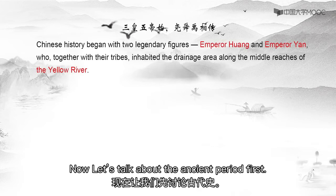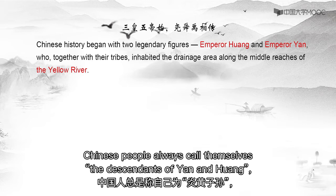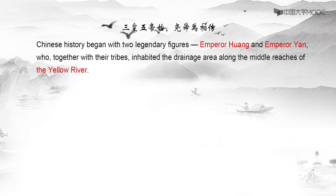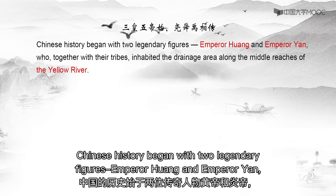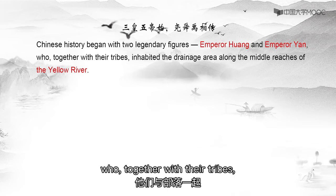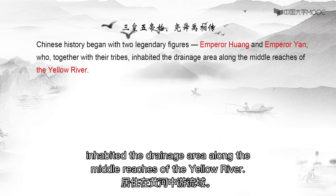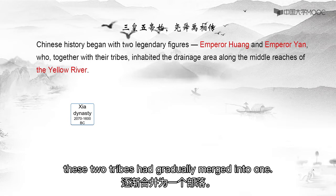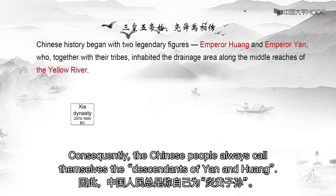Now let's talk about the ancient period first. Chinese people always called themselves the descendants of Yan and Huang. Chinese history begins with two legendary figures, Emperor Huang and Emperor Yan, who together with their tribes inhabited the drainage areas along the middle reaches of the Yellow River. By the time of the Xia Dynasty, after centuries of living side by side, those two tribes had gradually merged into one. Consequently, the Chinese people always called themselves the descendants of Yan and Huang.